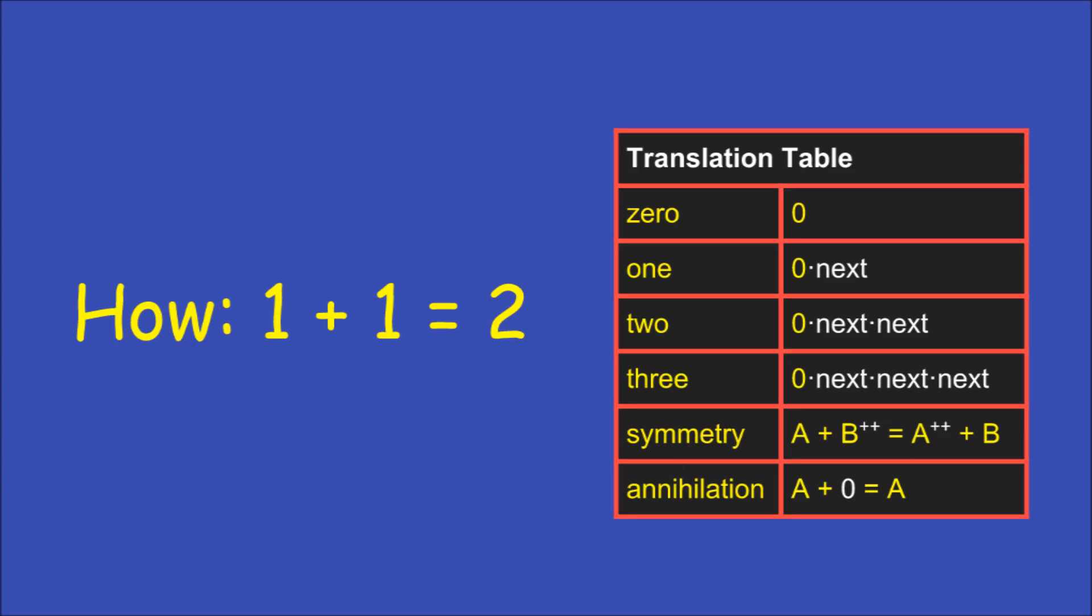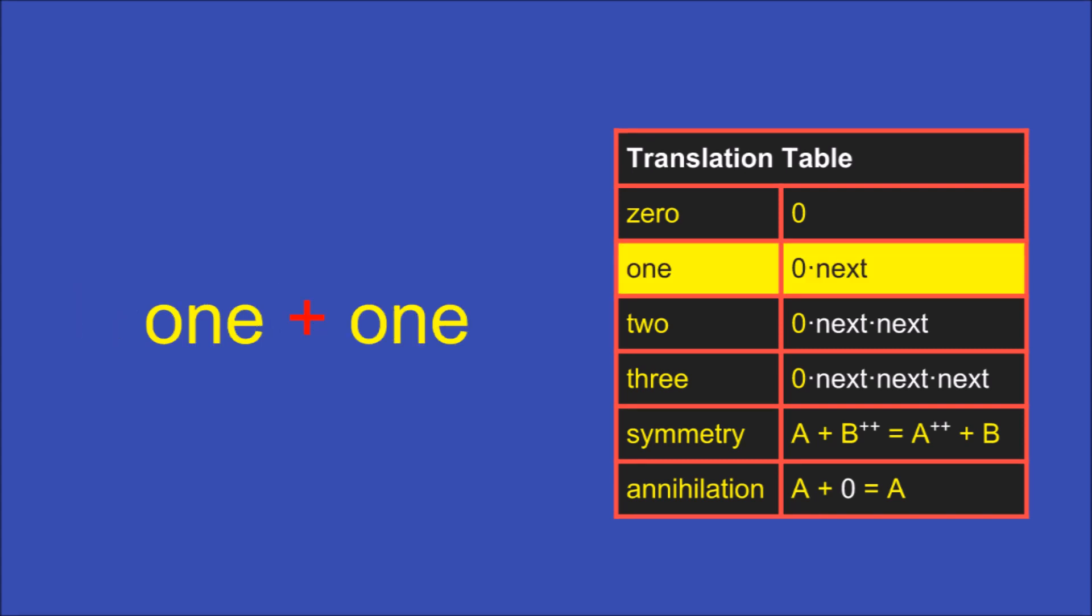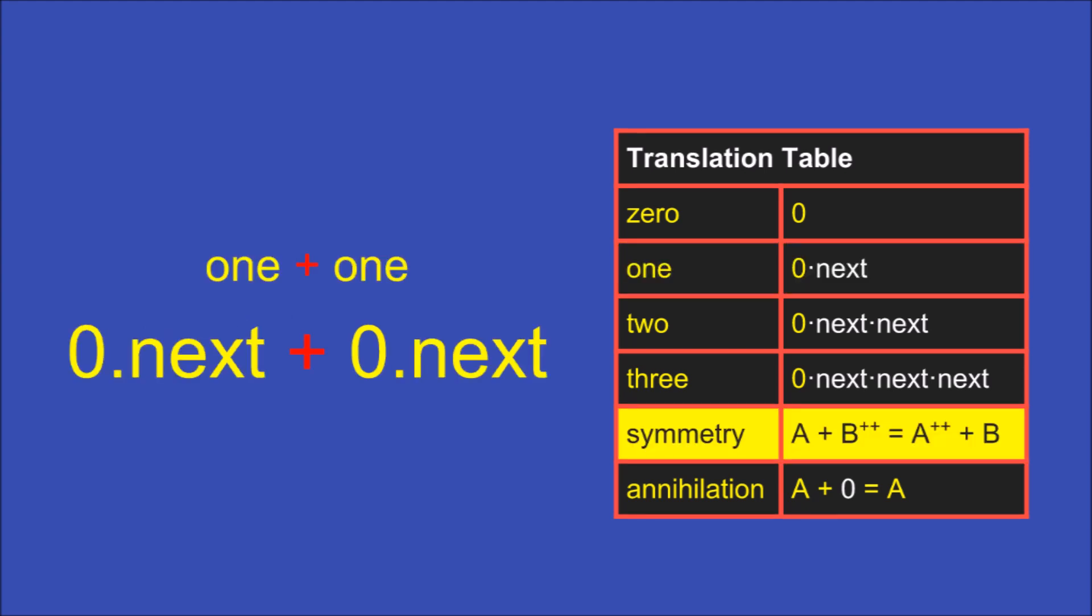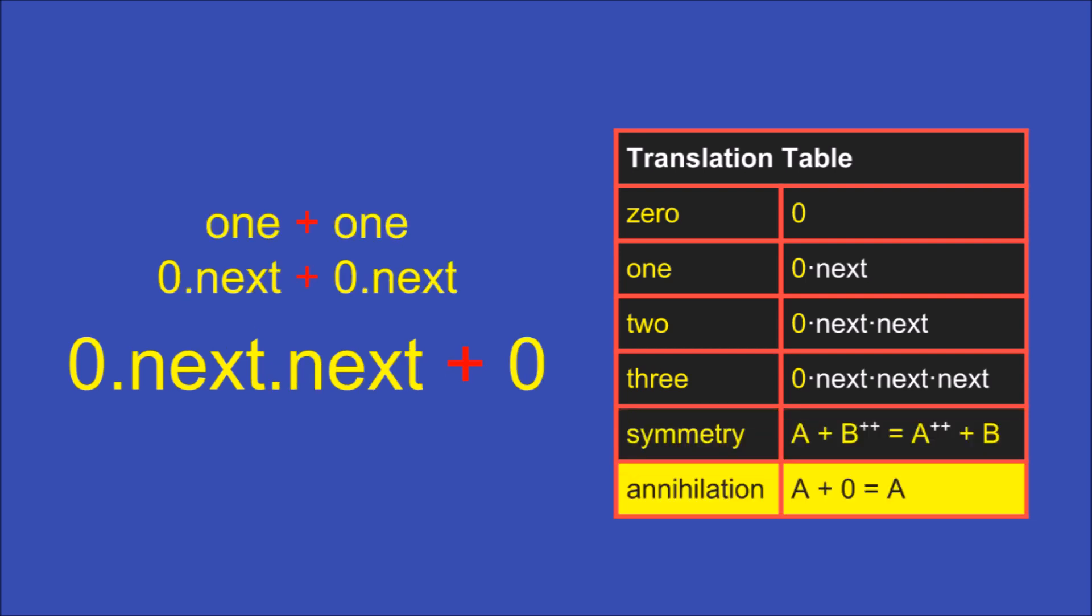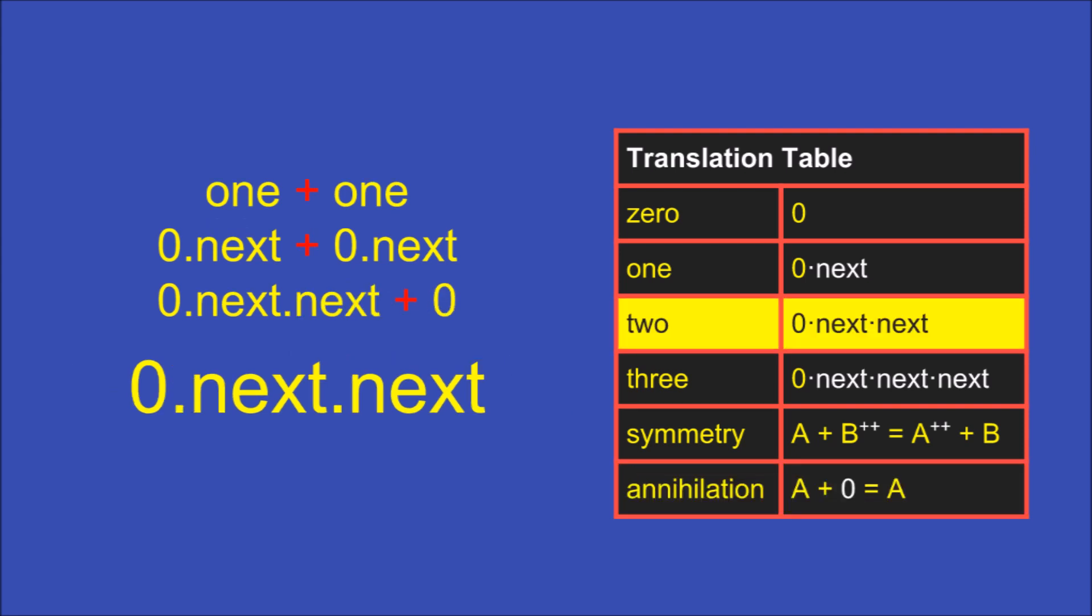Now we can use the definitions in this table to show how 1 plus 1 equals 2. We start with 1 plus 1. From the table of names, we rewrite it as 0.next plus 0.next. Using the symmetry rule, this is the same as 0.next.next plus 0. And with the annihilation rule, we can get rid of that plus 0 to leave just 0.next.next. Look this up in our translation table, and find that we gave this particular sequence the name 2.